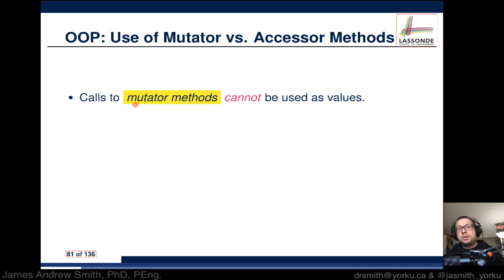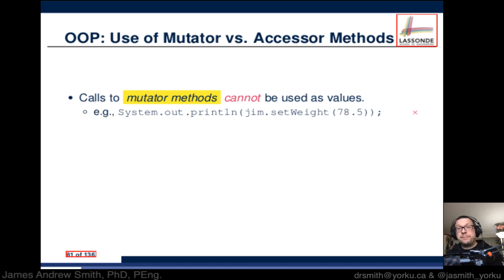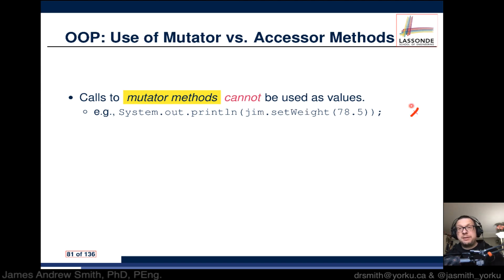Calls to mutator methods - another way to say it would be changer methods - cannot be used as values. For instance, we can't use this inside the parentheses of println because it won't output anything. That's a big fat X right there.